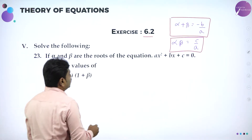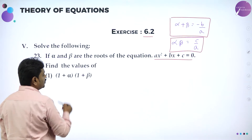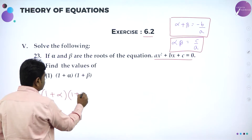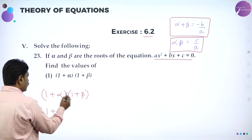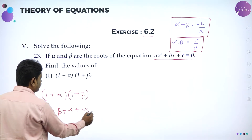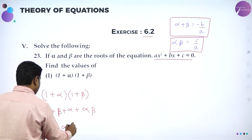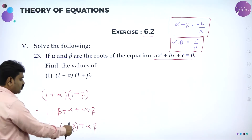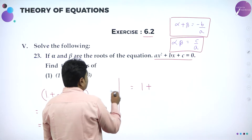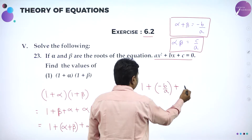If alpha and beta are the roots of the equation AX squared plus BX plus C equal to 0, find the value of 1 plus alpha into 1 plus beta. Now I will consider what is given: 1 plus alpha into 1 plus beta. Simplify this: 1 into 1 is 1, plus 1 into beta is beta, plus alpha into 1 is alpha, plus alpha into beta is alpha beta. That is 1 plus alpha plus beta plus alpha into beta. So, 1 plus sum of the roots plus product of the roots. Alpha plus beta means minus B by A, and alpha into beta is C by A.